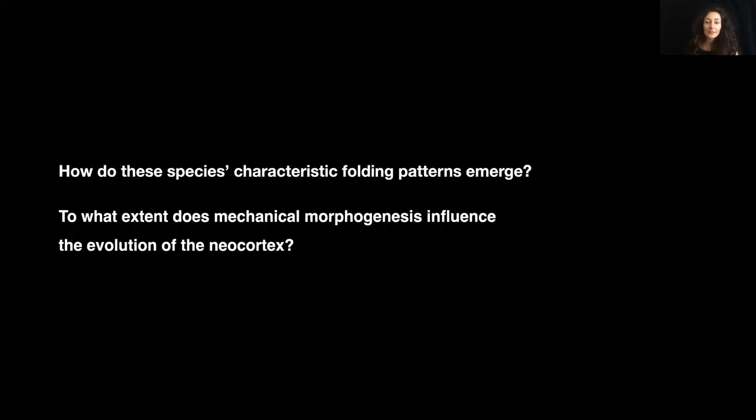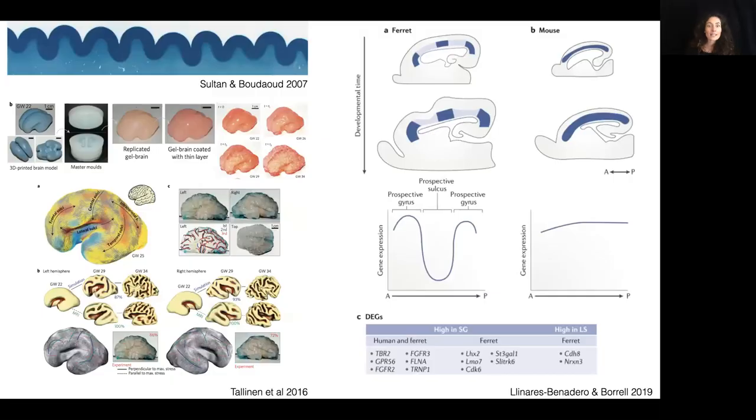Now, how does the species characteristic folding patterns emerge? To what extent does mechanical morphogenesis influence the evolution of the neocortex? During the last few years, the idea that brain folding is produced by a mechanical instability triggered by neocortical expansion has been more and more recognized. However, folding patterns are still believed to be genetically encoded. We would like to ask to what extent mechanical morphogenesis influences the organization, development and evolution of the primate neocortex.